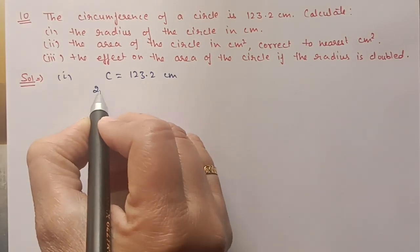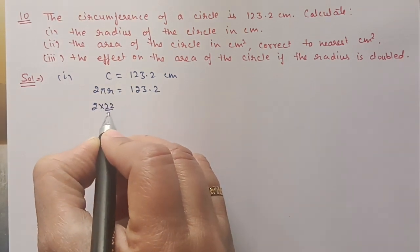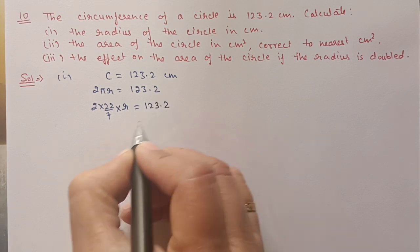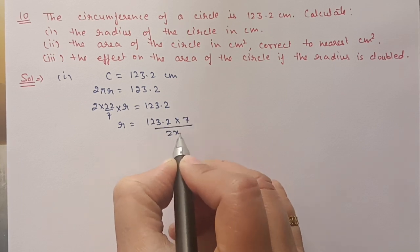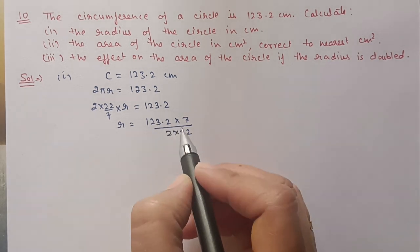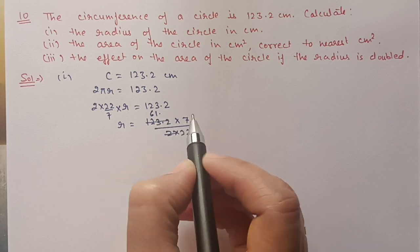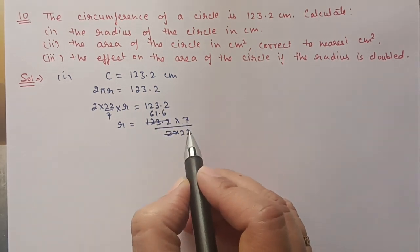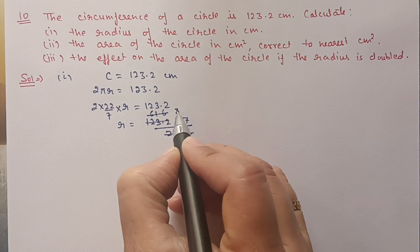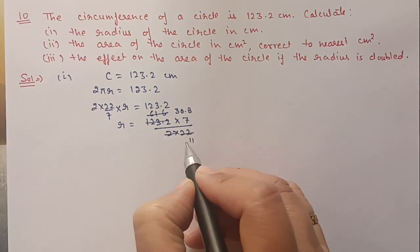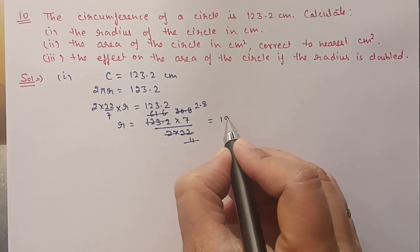Circumference means 2πr = 123.2, so 2 × (22/7) × r = 123.2. Rearranging, r = 123.2 × 7 / (2 × 22). Doing the cancellation — we cancel 2, then 22, and simplify — we get r = 19.6 centimeters.